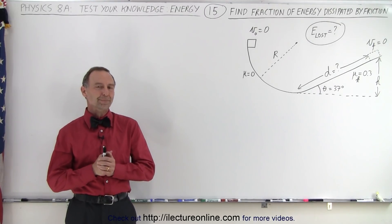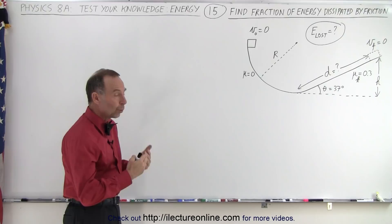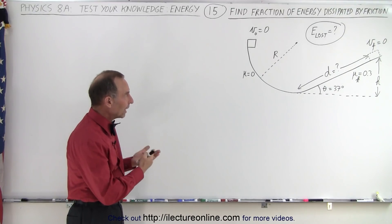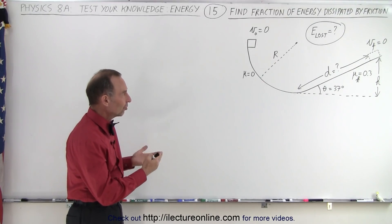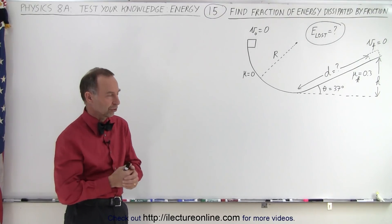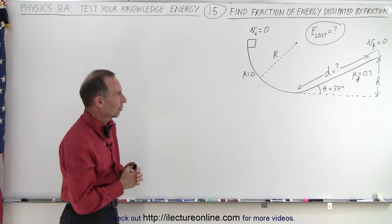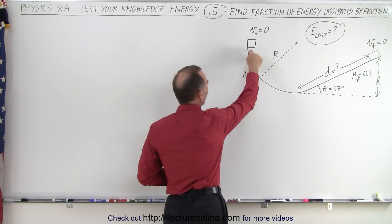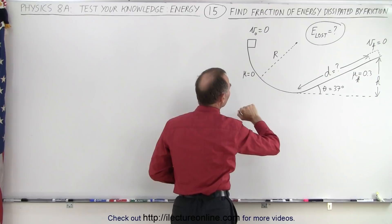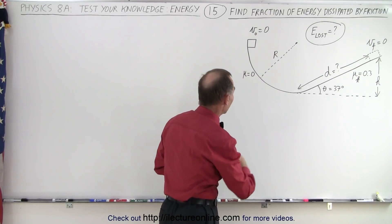Welcome to White Lecture Online. In this problem, we're trying to determine what percentage or what fraction of the original energy we have in the system is lost because of friction — the dissipation of energy due to friction. We have an object starting at the top of a semicircular path, or more technically correct, a quarter-circle path.